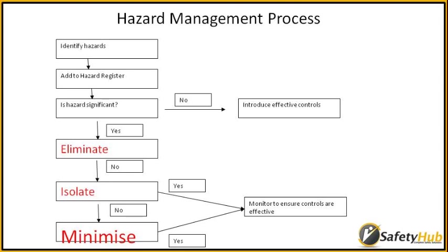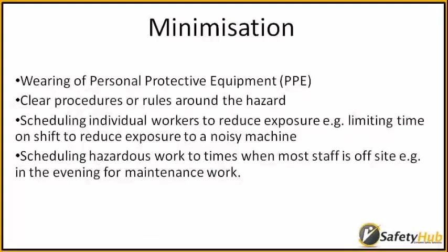Minimisation. This control method is the least effective because it relies on a lot of human interventions, and ironically it's the most used control method — it's where people go to first when thinking about control measures. This includes training or PPE, giving clear procedures or rules around the hazard, scheduling individual workers to reduce exposure — for example, limiting time on shift to reduce exposure to a noisy machine, or scheduling hazardous work to times when most staff are off site. The last two don't resolve the problem but reduce the risk to a smaller group, which may be more cost effective.